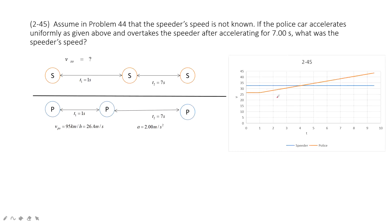If we draw a Vt graph, it should look like this one. The speeder moves at a constant velocity. And then, the police at first moves at a constant velocity at the first second.